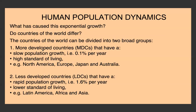More developed countries have much slower population growth, usually around 0.1% per year, and a higher standard of living. These include North America, Europe, Japan, and Australia. LDCs have a much more rapid population growth, around 1.6% per year, and a lower standard of living — things like Latin America, Africa, and Asia, though not every country in those regions fits neatly.